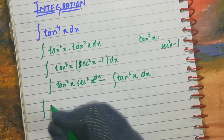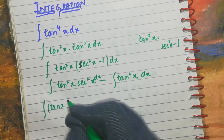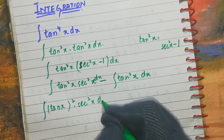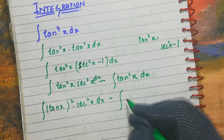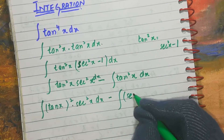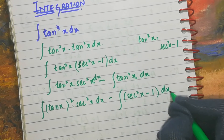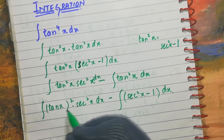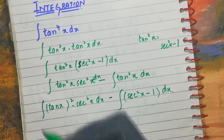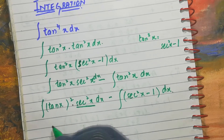For the first integral, write tan²x · sec²x dx. For the second integral, apply the identity of tan²x again: replace it with sec²x − 1 dx. Since the derivative of tan x is sec²x, which is present here, we can directly integrate.